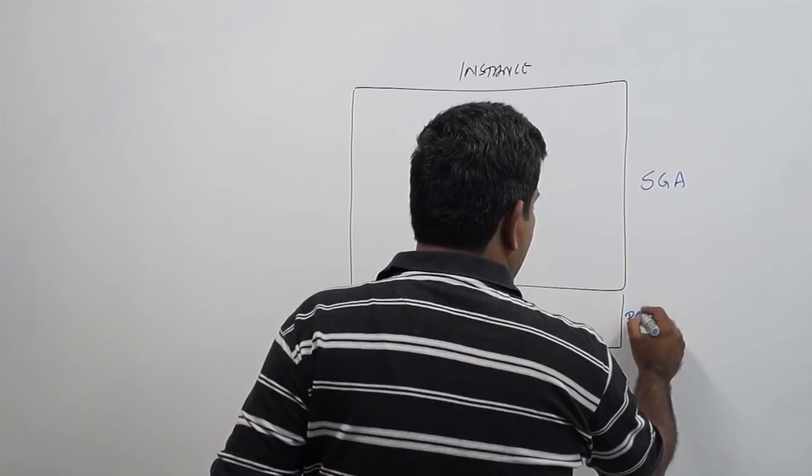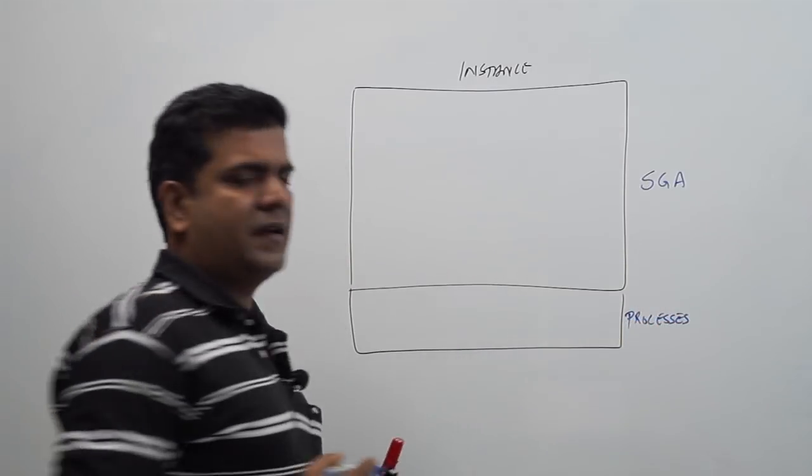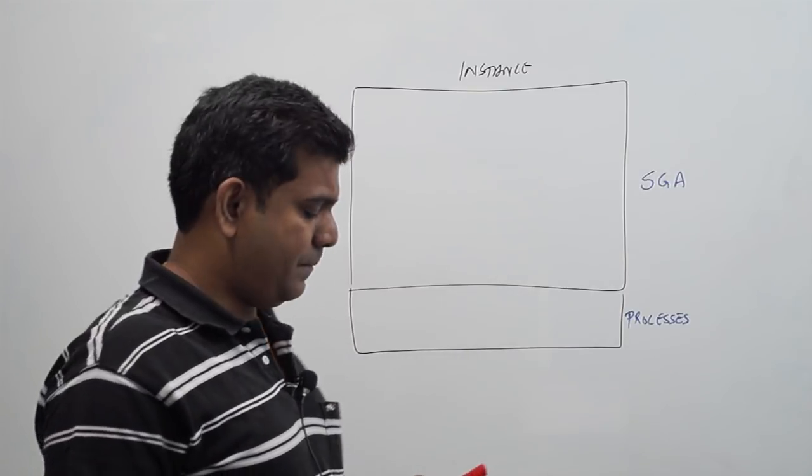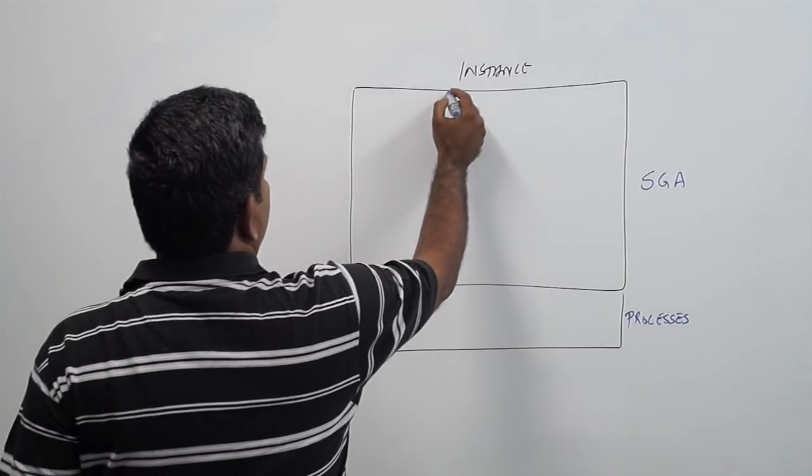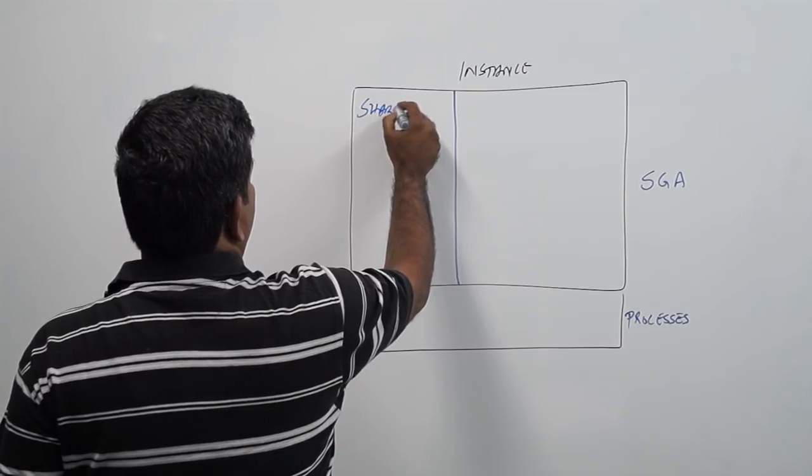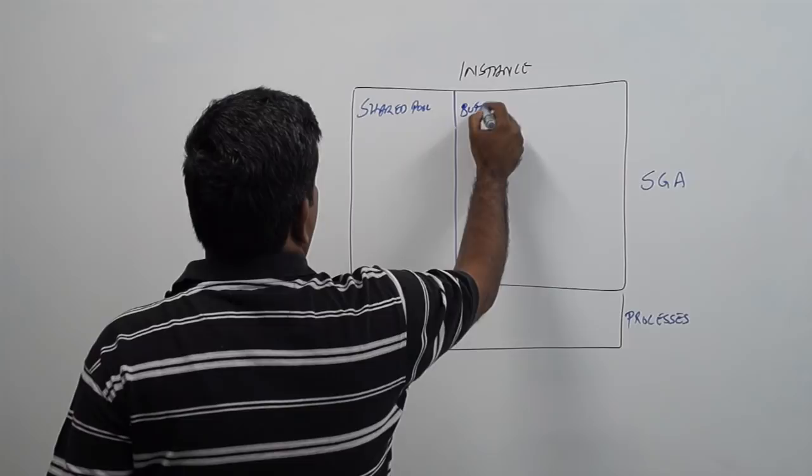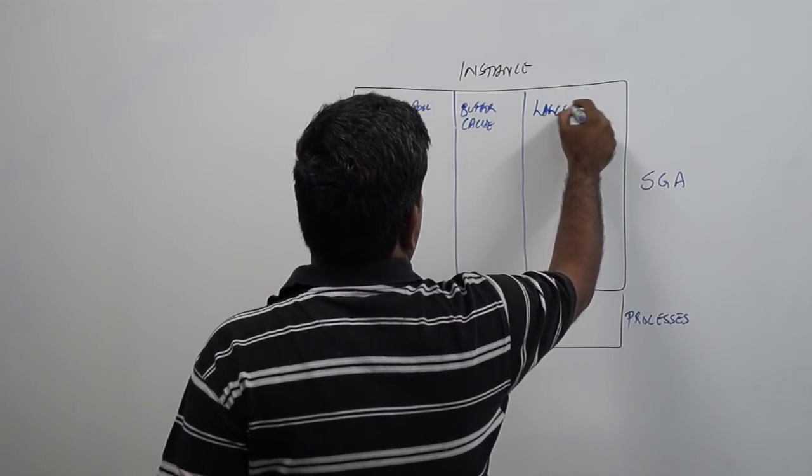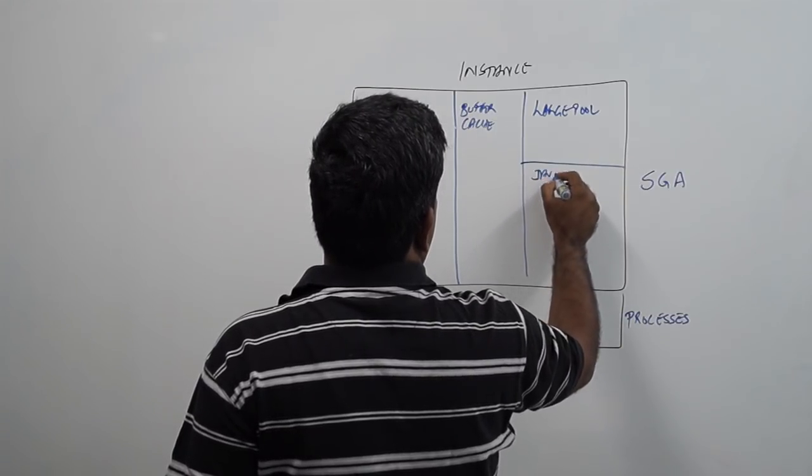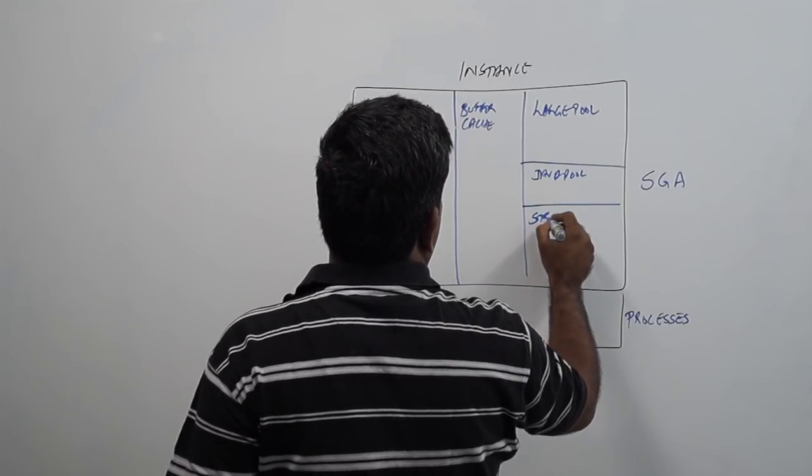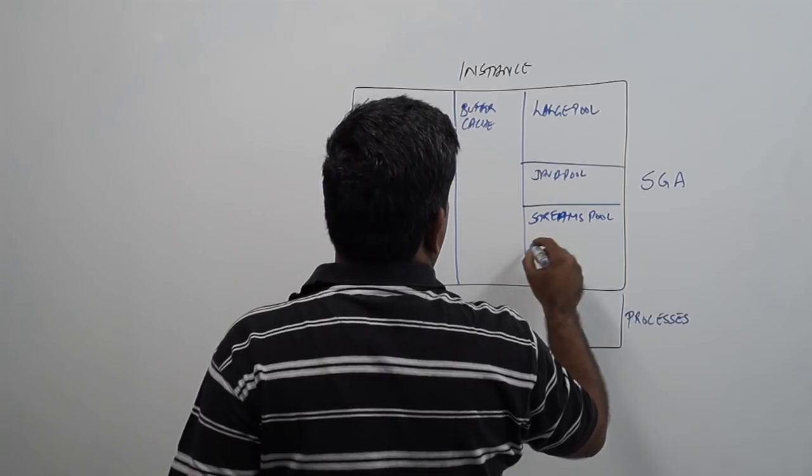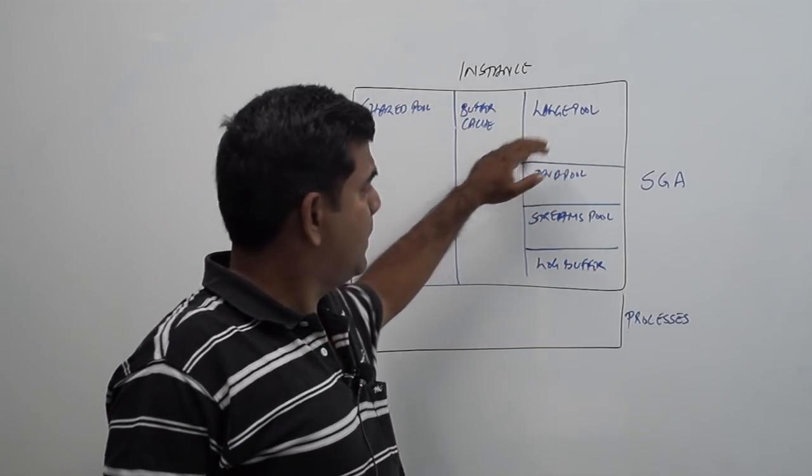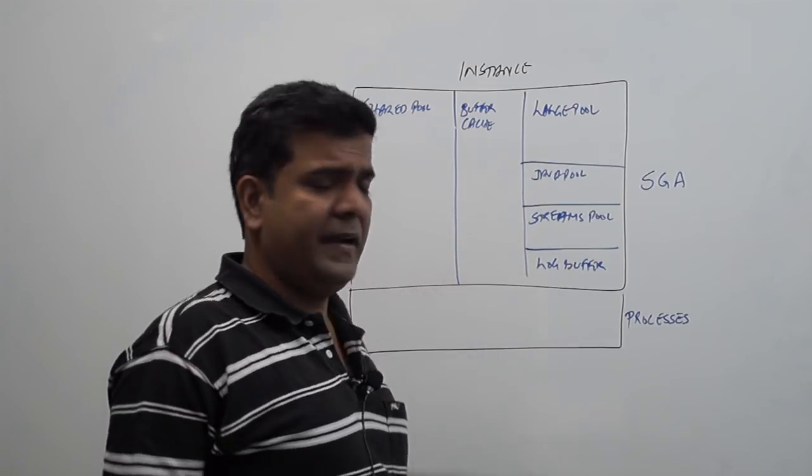And there are a bunch of processes that run in the memory. So, in this video, I am going to tell you in detail about the memory components. To begin with, there is something called as shared pool, buffer cache, large pool, java pool, streams pool, and log buffer. Let us understand each component in detail.